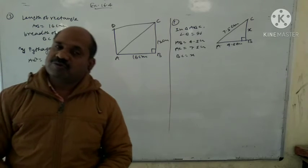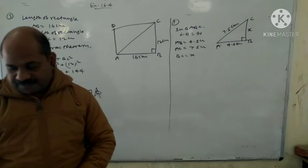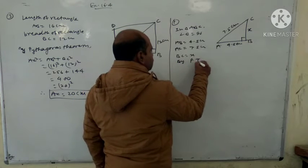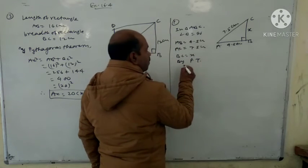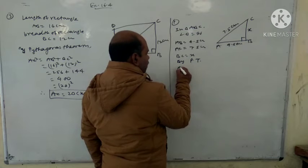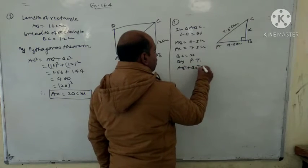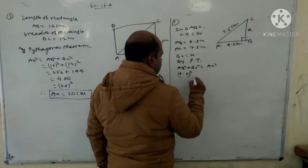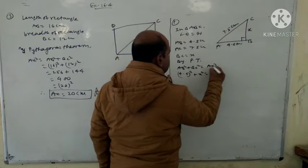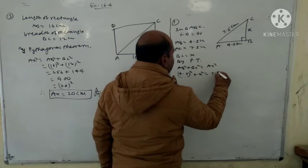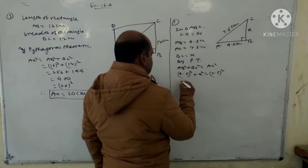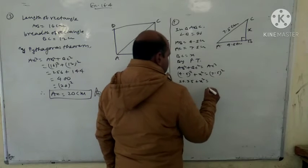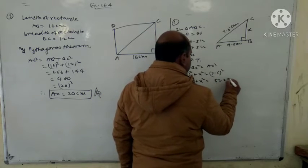Applying Pythagoras theorem: AB square plus BC square equals AC square. So 4.5 square plus X square equals 7.5 square. That gives 20.25 plus X square equals 56.25. So X square equals 56.25 minus 20.25, which equals 36.